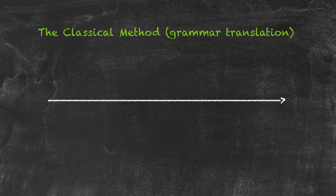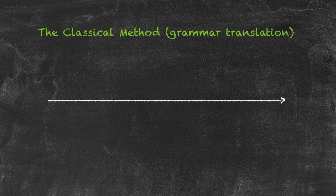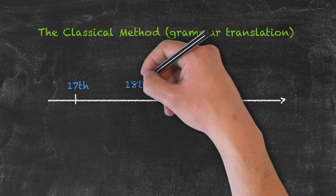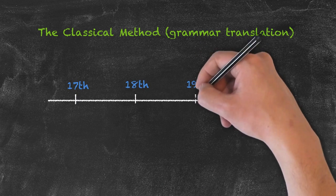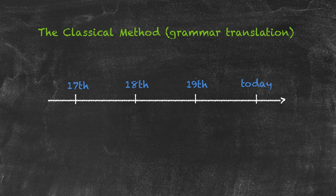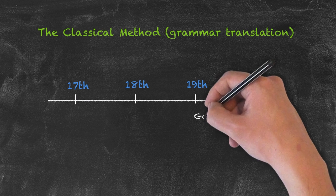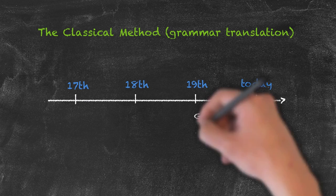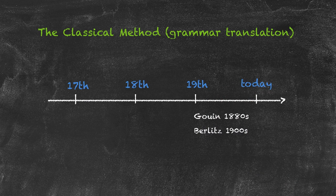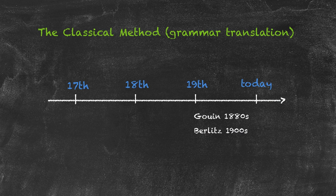Despite the criticisms of this method, and particularly the fact that it's unnatural, this methodology was in use all the way through the 17th, 18th, and 19th centuries, and indeed it's still in use today. However, Gouin in the 1880s and Berlitz in the early 1900s decided that this methodology was so unnatural that they wanted to come up with something new.